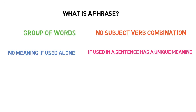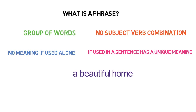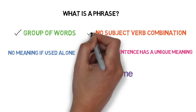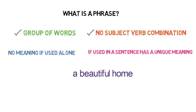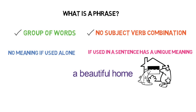Let's understand these qualities with an example: 'a beautiful home.' Is it a group of words? Yes, it is. Is this group of words having a subject and verb? No. So no subject-verb combination is there. Is it making any sense while used alone? Through the group of words 'a beautiful home,' we are able to understand that we are talking about home, but is it conveying any meaning or thought? No. So it has no meaning if used alone.